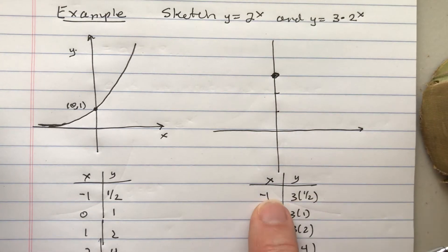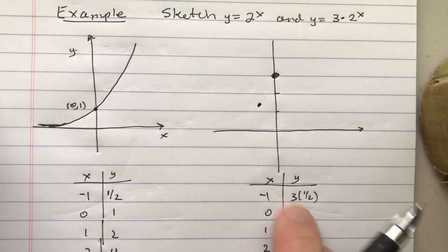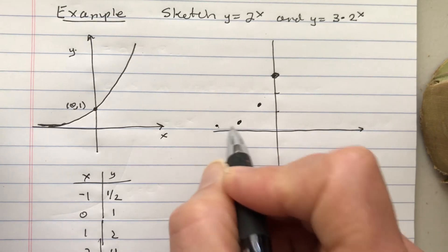But for negative 1, you still have 3 times 1/2. It's down here. I didn't go any further, but if you have 3 times 1/4, it's down here. 3 times 1/8, down here.